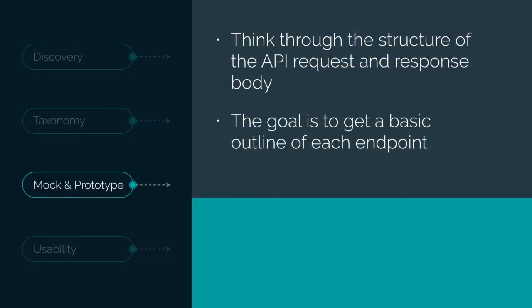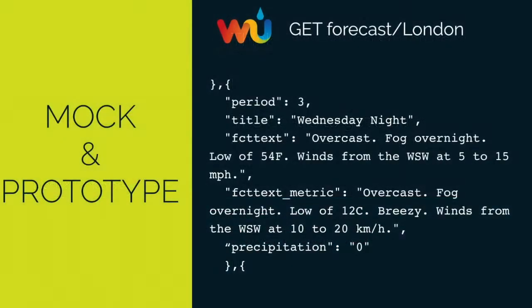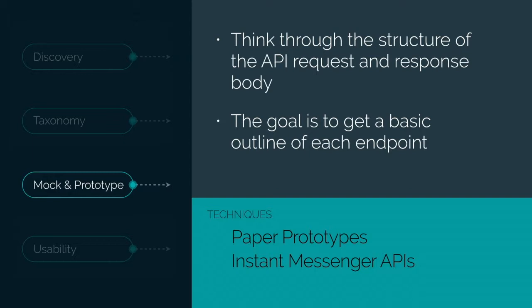At this point we still haven't picked up a word processor — it's amazing how far you can get without coding a single line. The third piece is mocking and prototyping, where you do need a word processor, and Slack or some instant messenger is the next level of high-tech. You've got your methods, your resources, your high-level API structure, and now you want to start digging into those request and response bodies — an outline of each endpoint, not every detail finalized, but what content belongs in each.